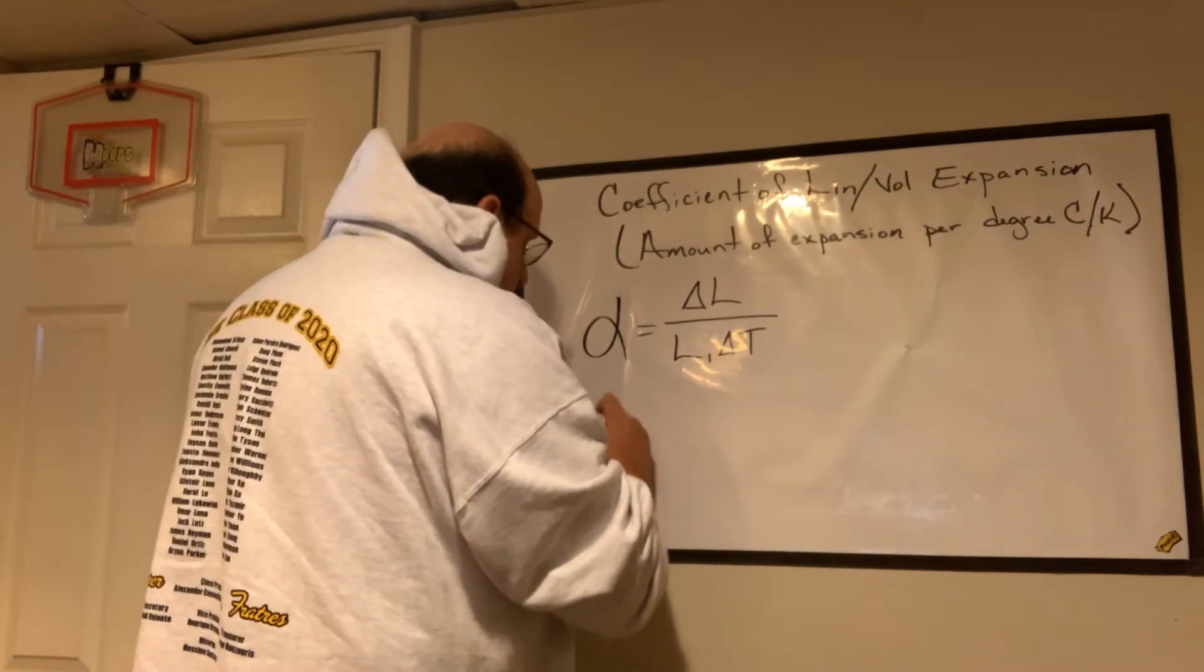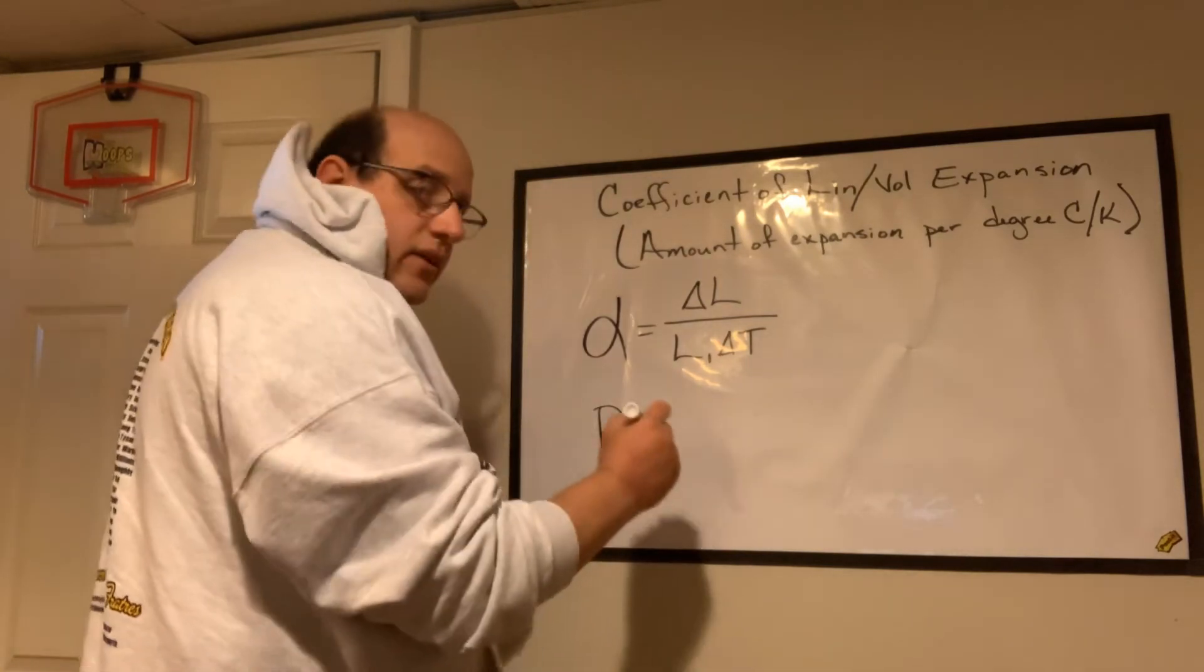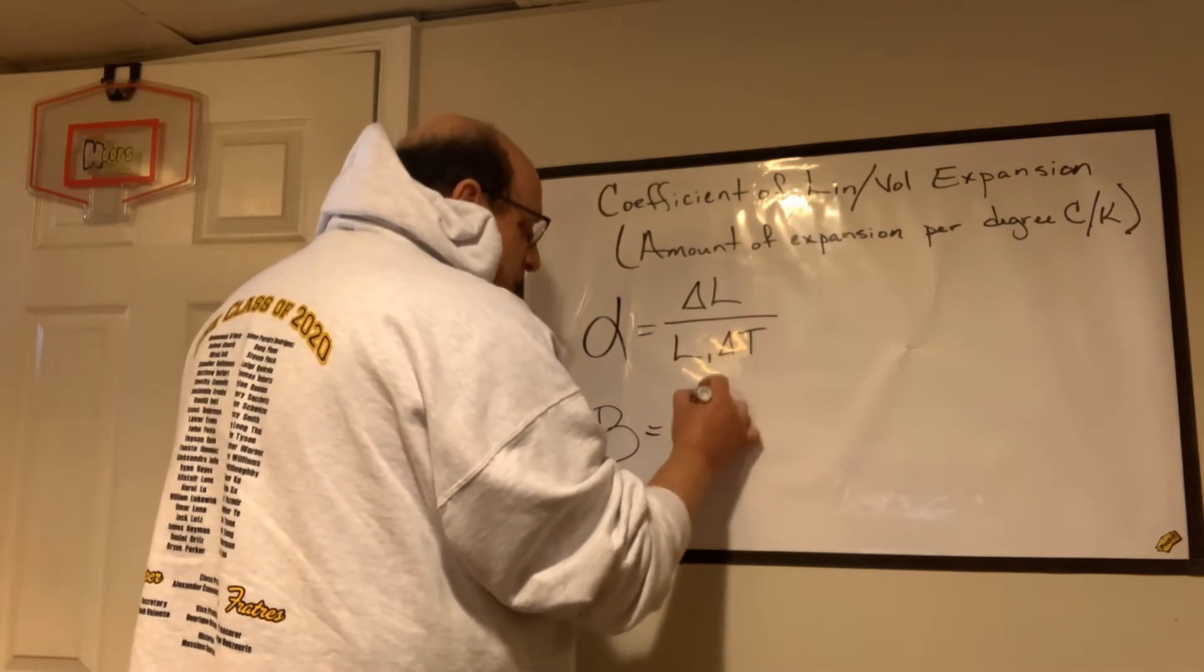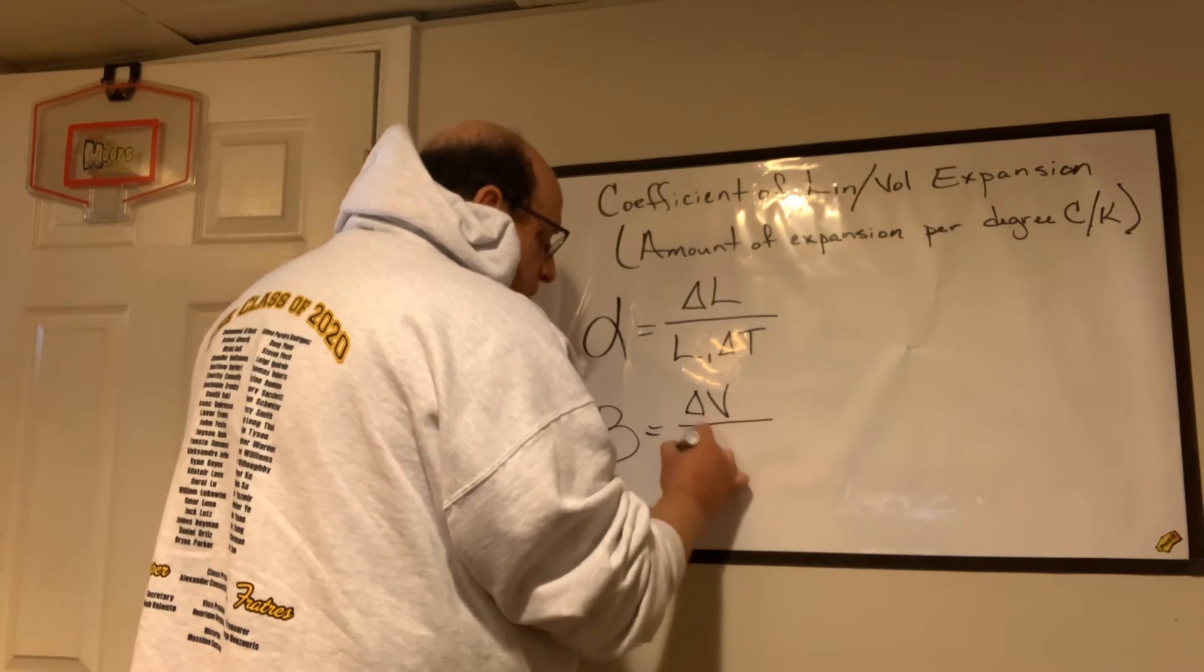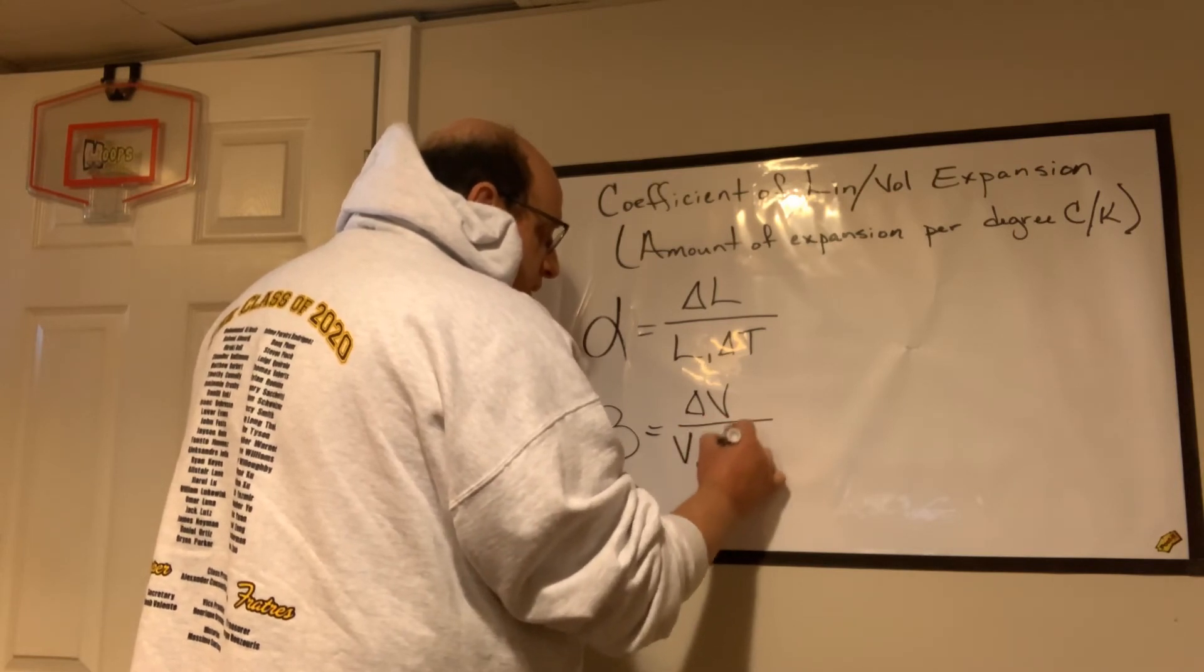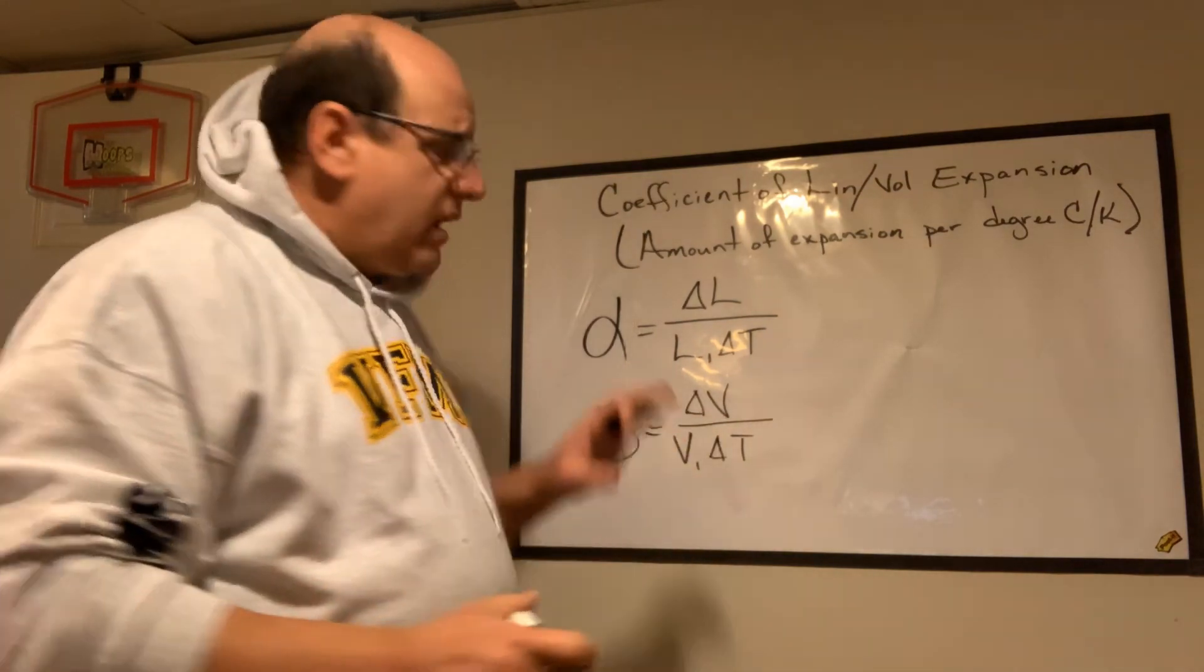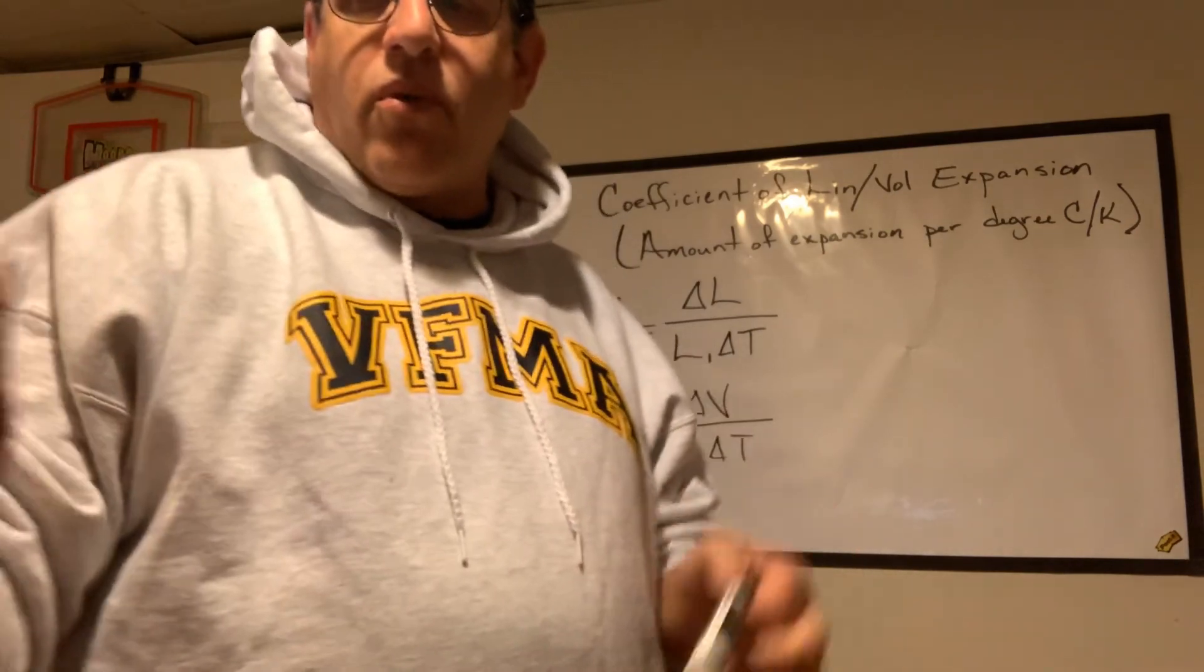And then beta, that big weird looking B, is a volume expansion, and it has the same idea. It's the change in volume over the original volume times the change in temperature. And that's really it. And everything stems from here if you want to find any answer for number three and number four of what you just did.